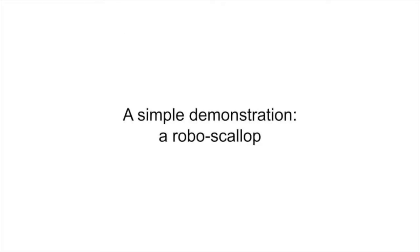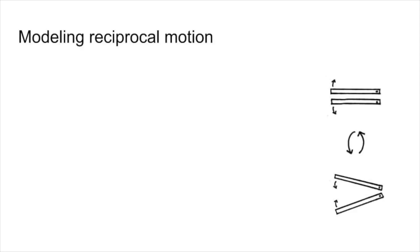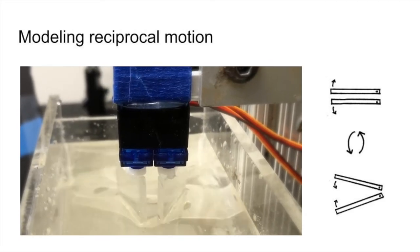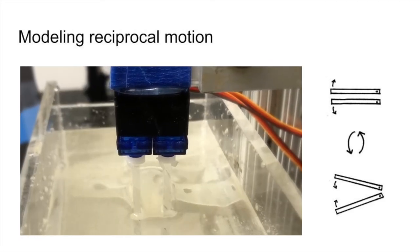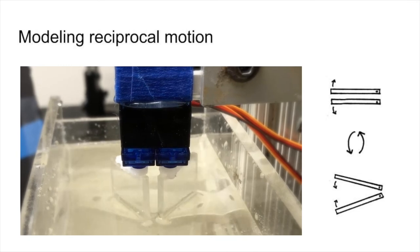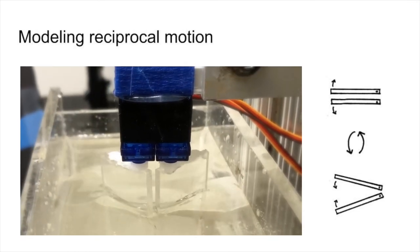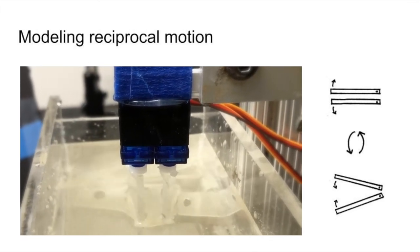To demonstrate how a scallop could not swim in a low Reynolds number environment, we built a simple one degree of freedom flapping mechanism, a robotic scallop. Our robotic model was constructed using an Arduino controlled DC motor to reproduce the reciprocal motion of a hinged swimmer. Two plastic rigid flaps were attached to this motor and then immersed in a highly viscous fluid, as seen in the video.